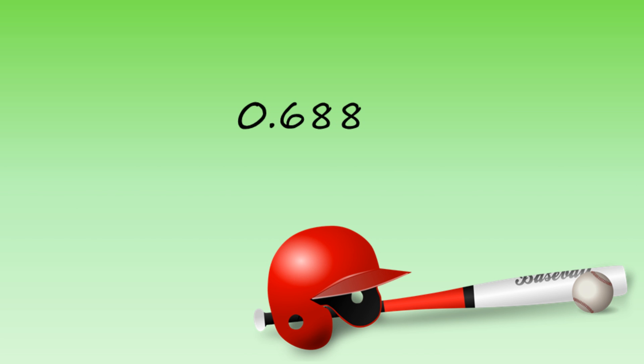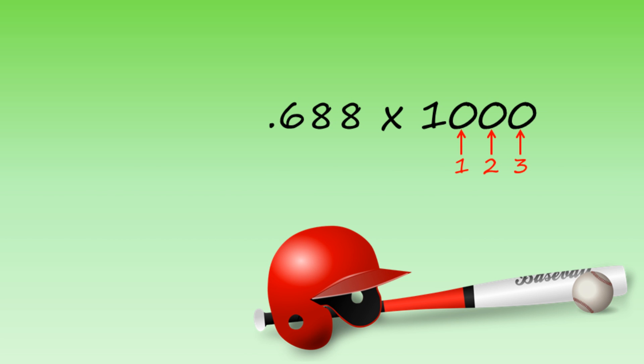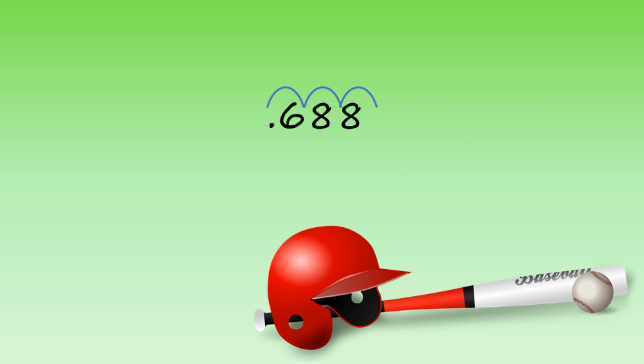Now we don't say batting averages like this. Instead, we'd say that this is an average of 688. In effect, we multiply all batting averages by 1,000 to make them easier to say. To multiply by 1,000, since it has three zeros, you move the decimal point three places to the right. So 0.688 becomes 688.